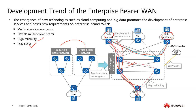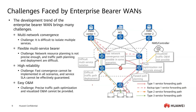The third enterprise requirement is high reliability — ensuring that even if a link fails, traffic can still reach its destination. The fourth requirement is easy operation and management. These are the trends and requirements enterprises are facing today.